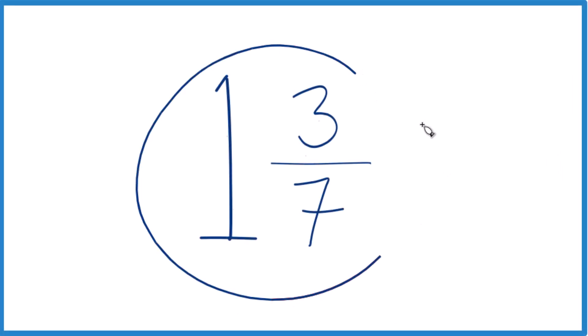Let's write the mixed number 1 and 3 sevenths as an improper fraction. Here's how you do it.